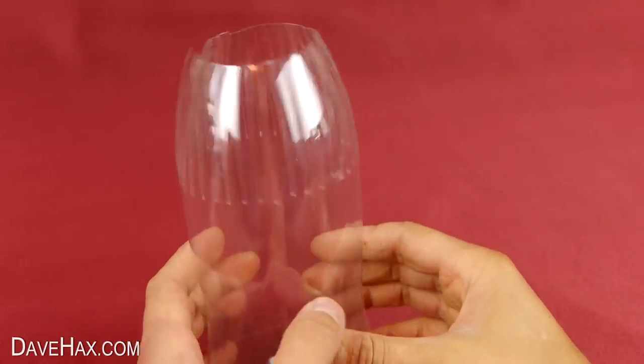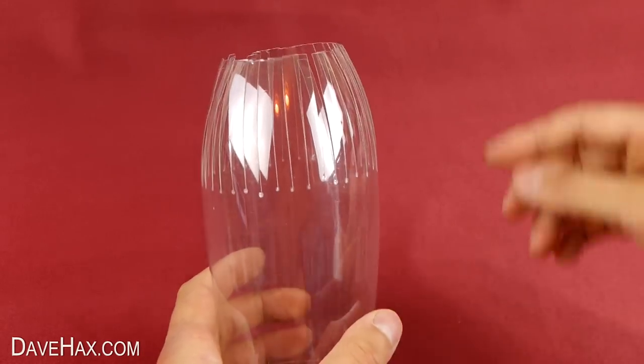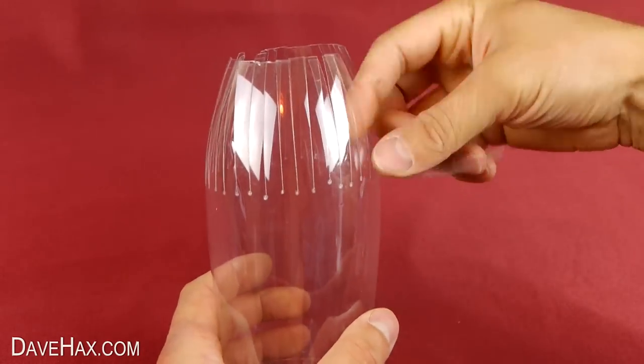When you're done, it should look like this. Next we need to bend all the strips out to make a sort of flower, like this.